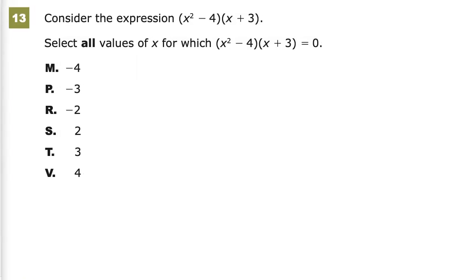This is the Algebra 1 practice test for TN Ready. Question number 13. Consider the expression x squared minus 4 times x plus 3. Select all x values for which x squared minus 4 times x plus 3 equals 0.